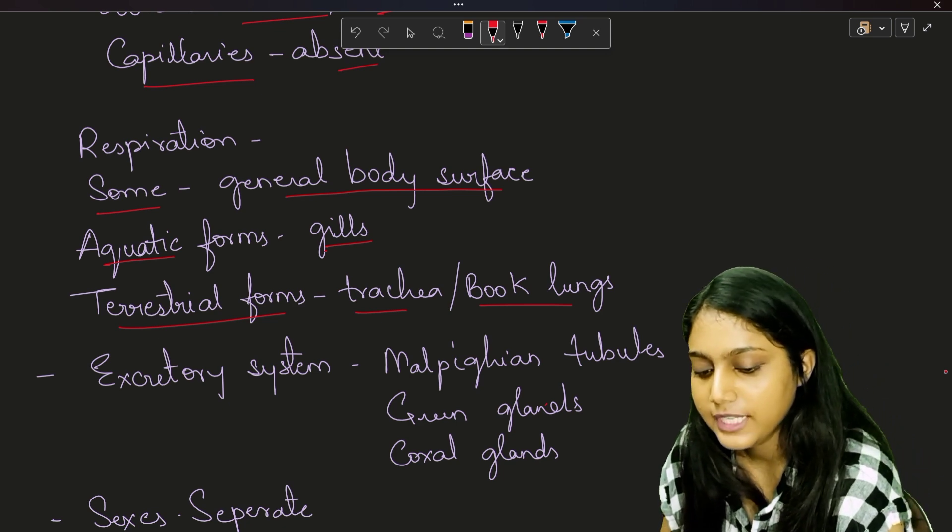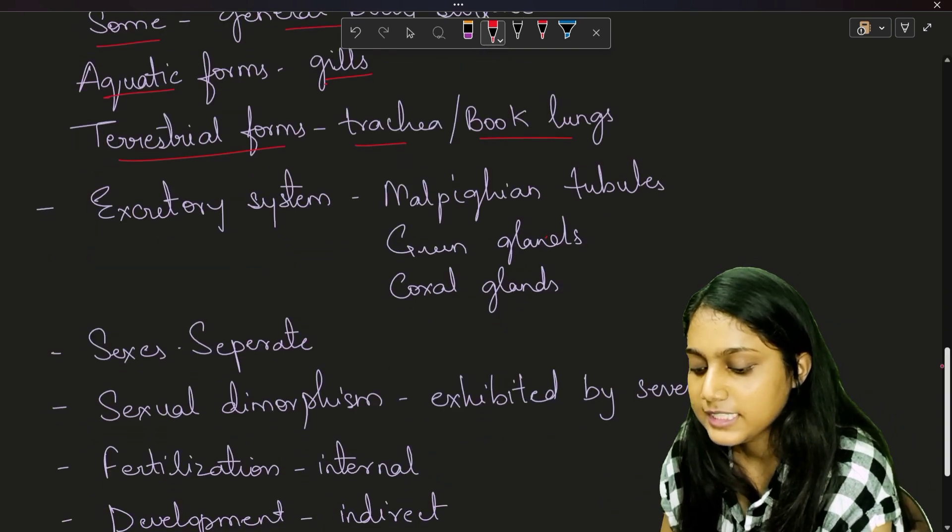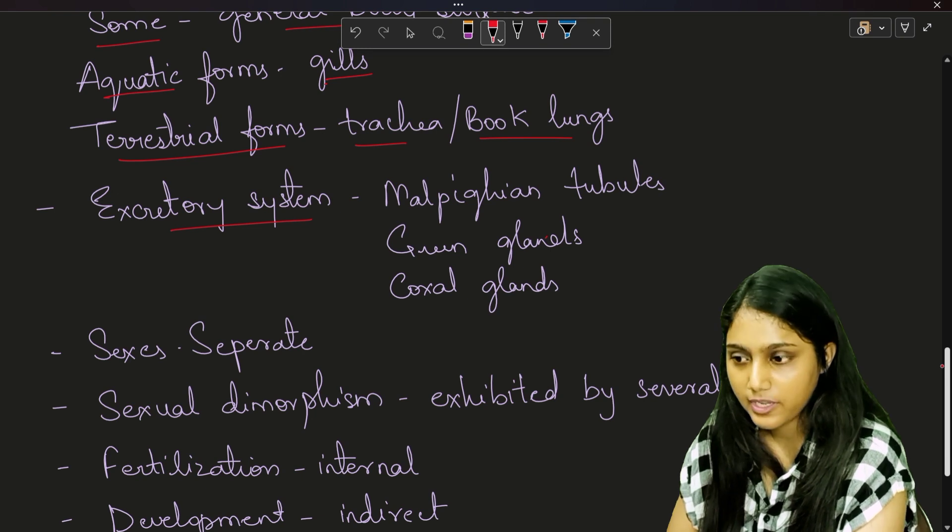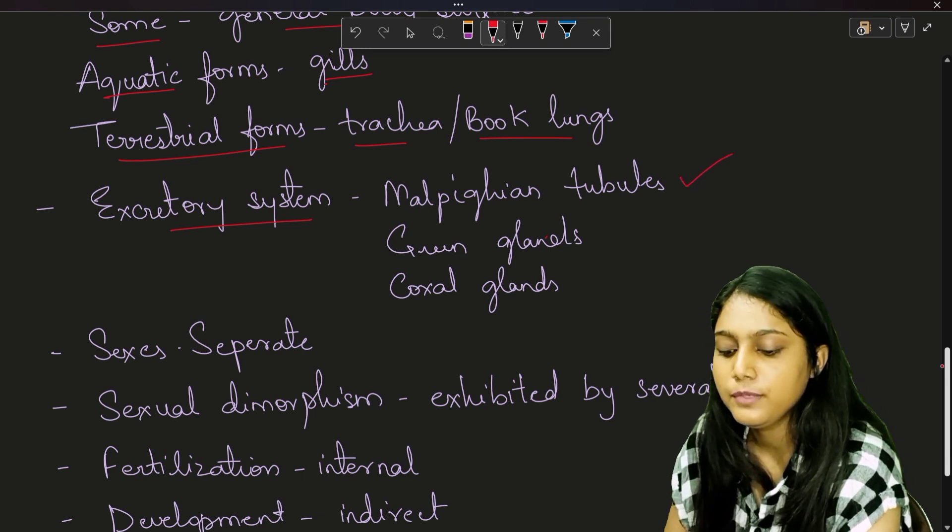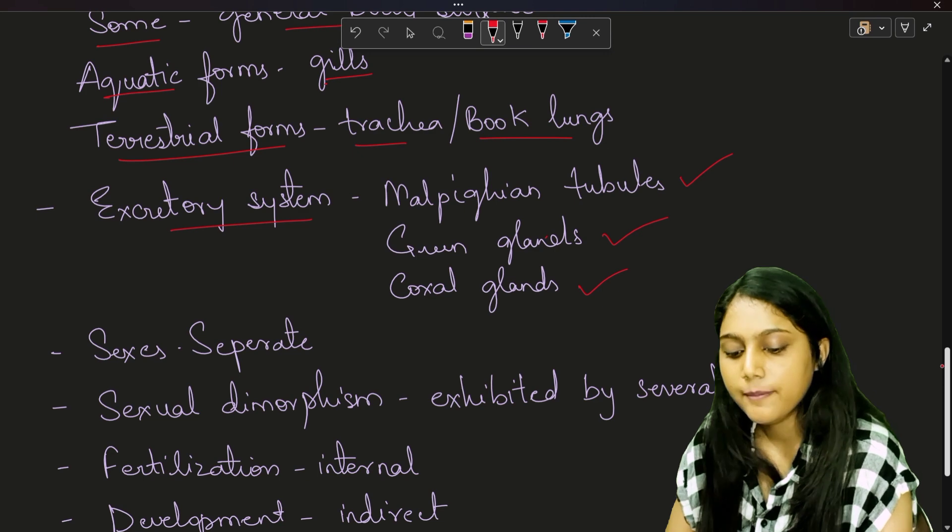Next, talking about their excretory system. The excretory system consists of the following structures such as Malpighian tubules, green glands or coxal glands.